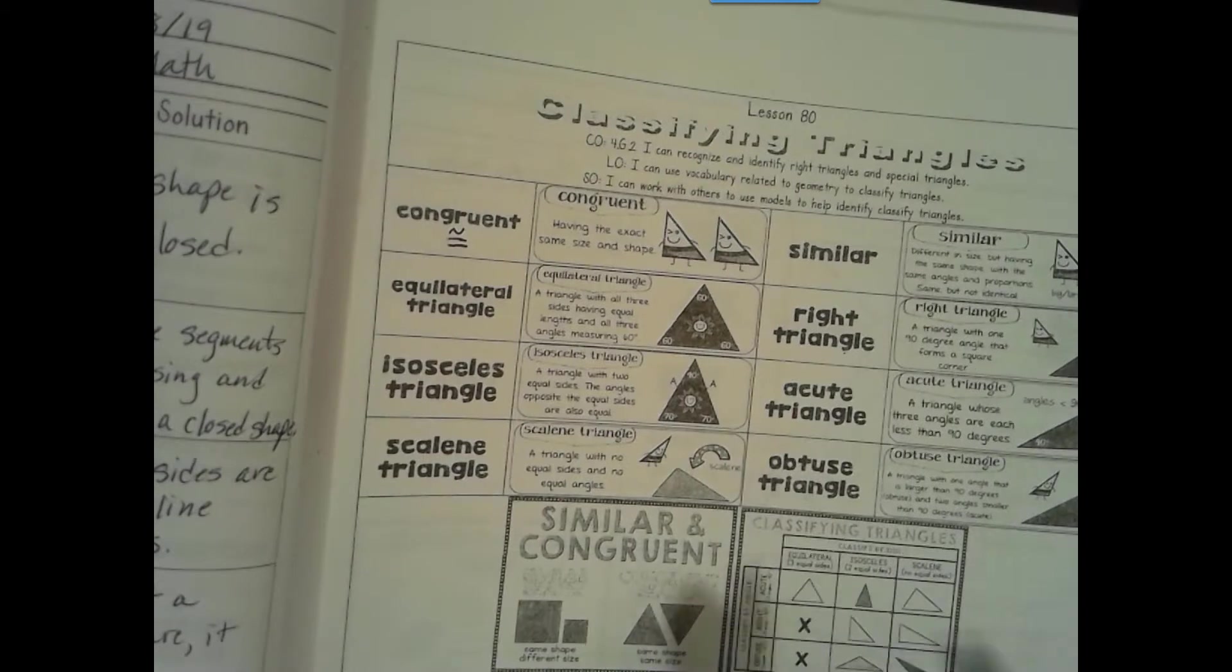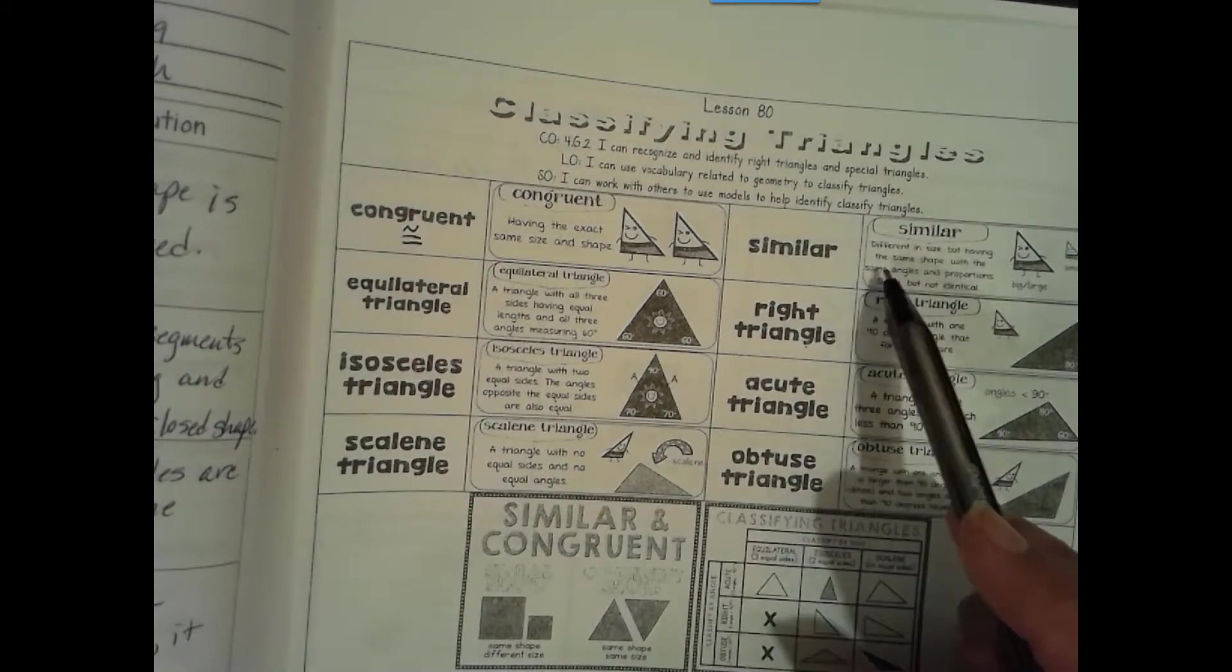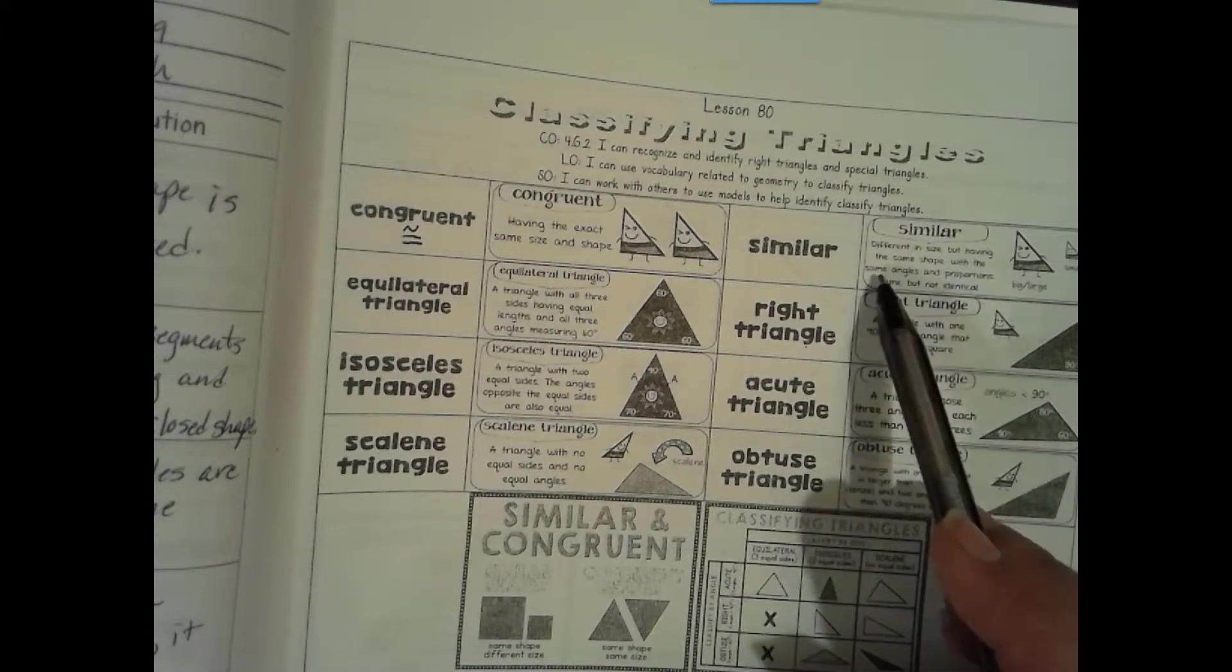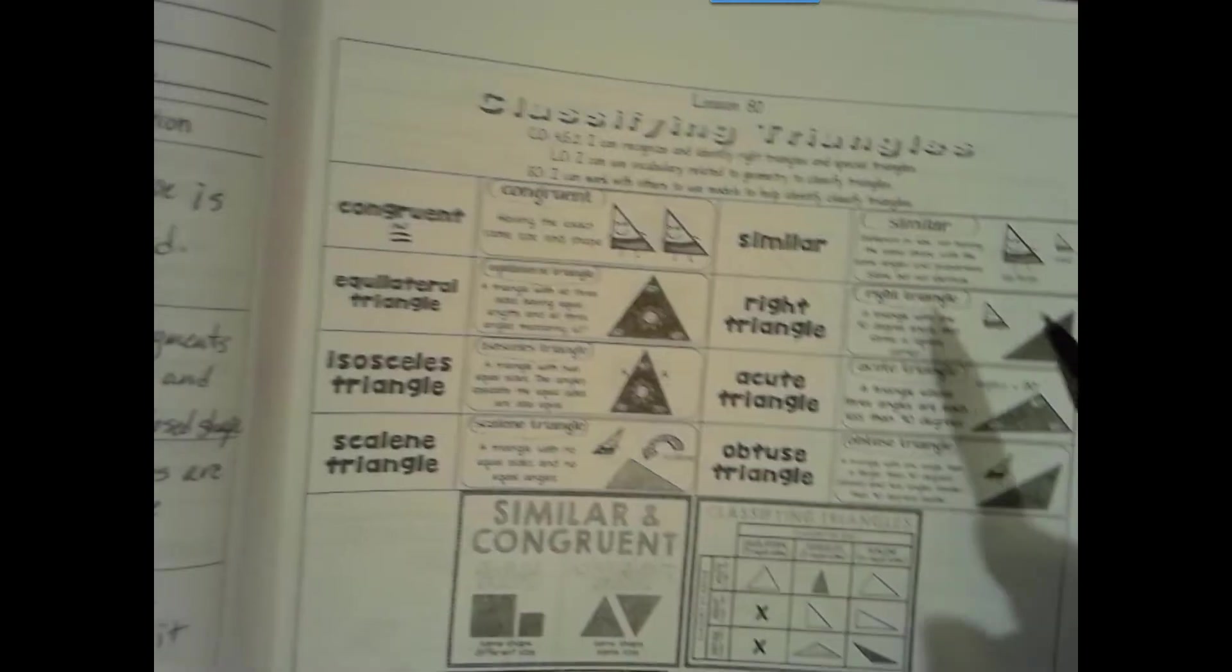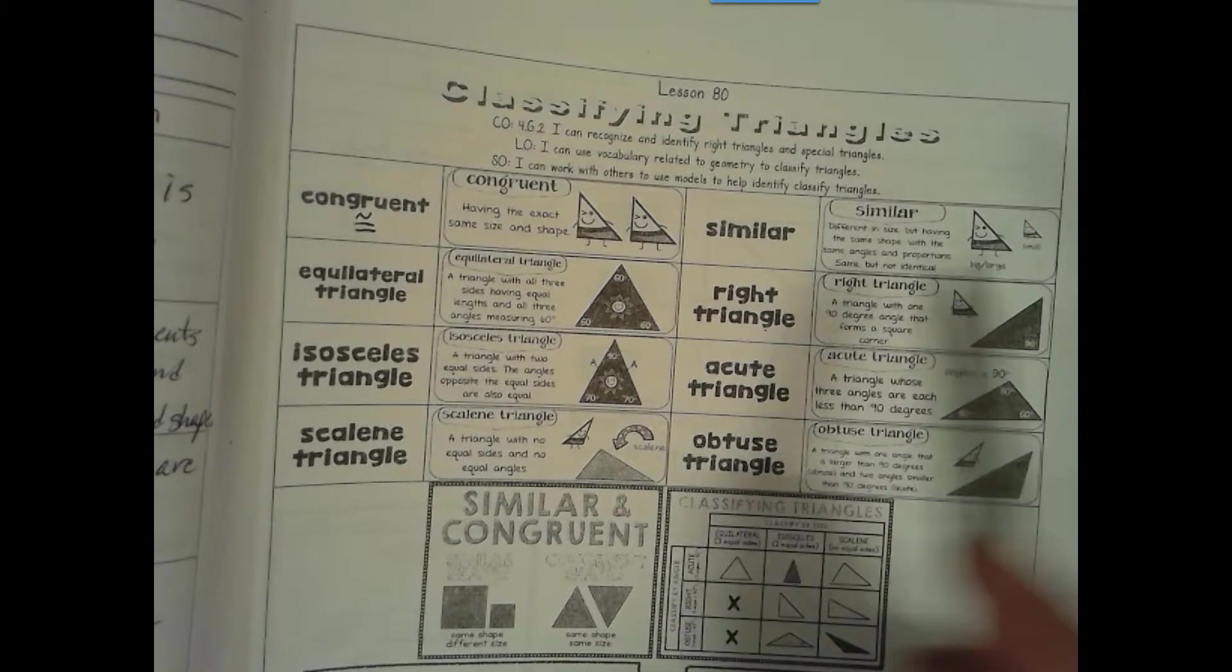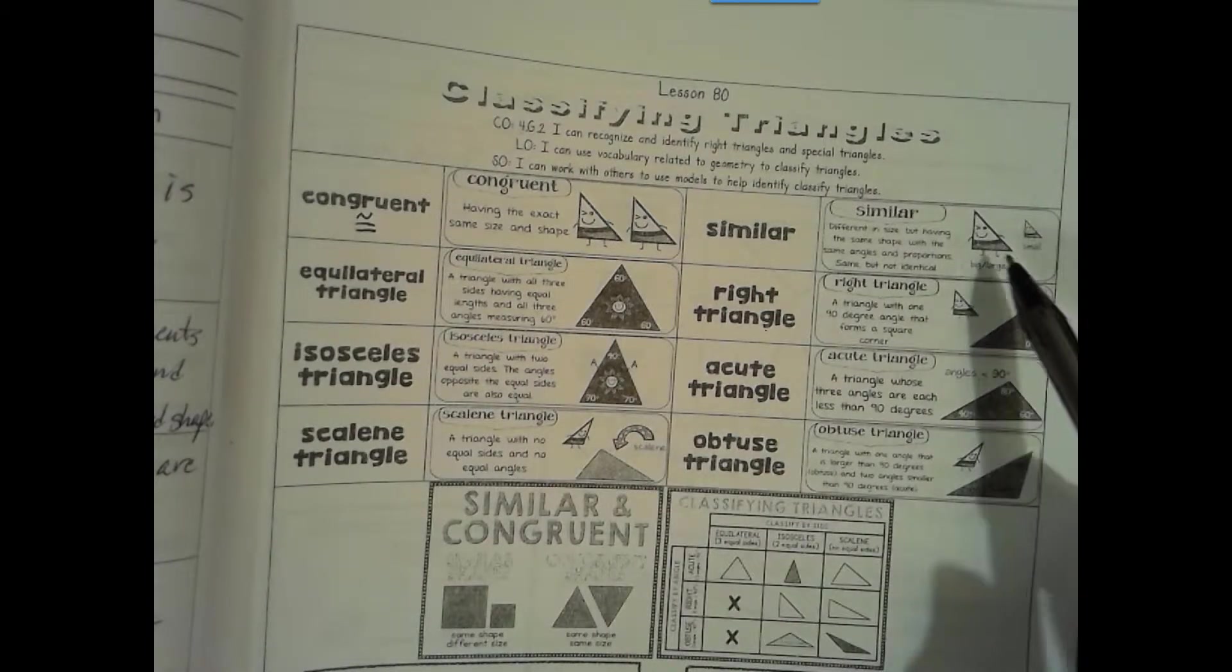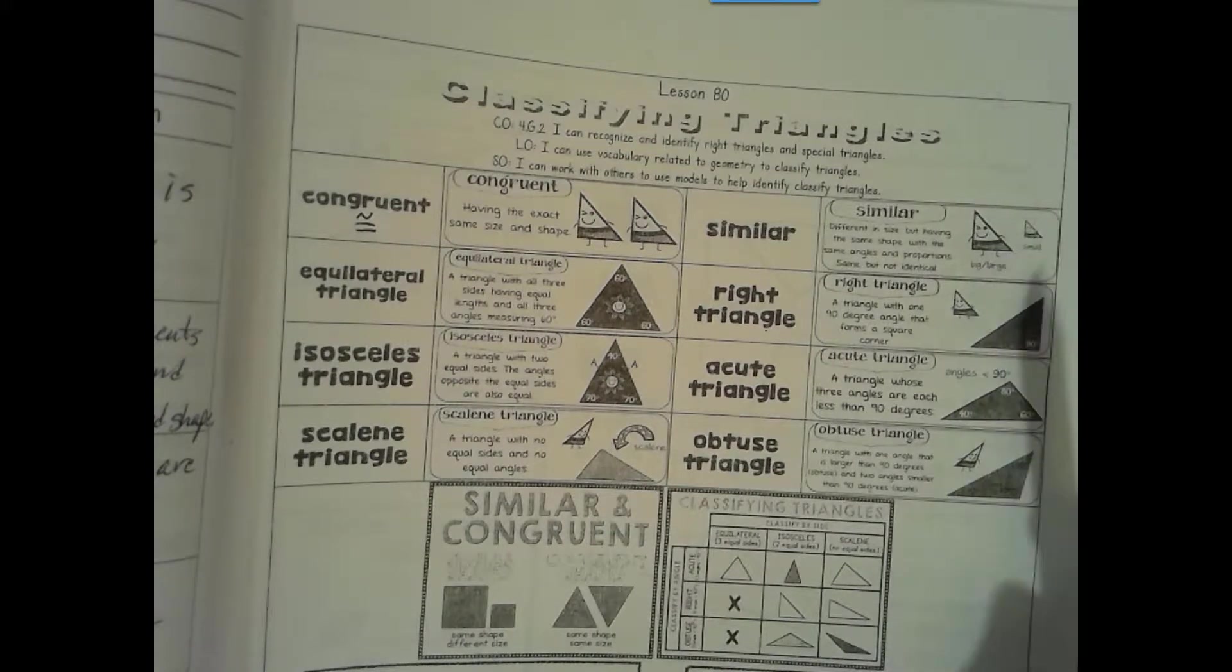And then the word similar: different in size but having the same shape with the same angles and proportions. Same but not identical. So here we have two triangles. On this one they're exactly the same size and same shape. Here they're the same shape but they're not the same size, so they're similar.